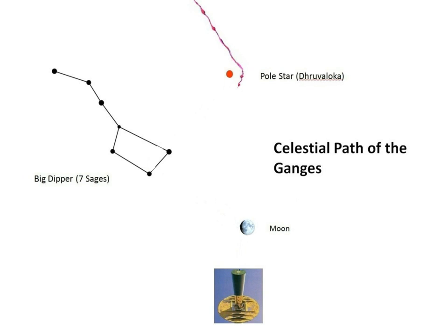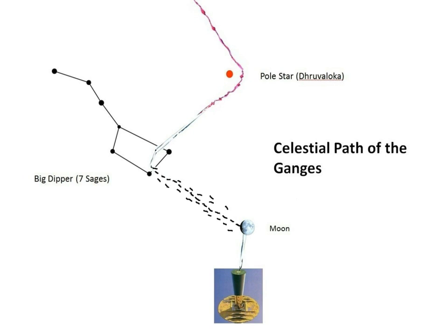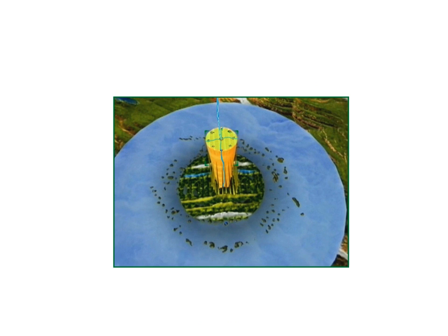It first of all goes past Dhruvaloka, or the pole star, past the Big Dipper or the seven sages — depending on what you want to call it. It enriches the moon in a number of celestial airplanes and aircraft, but then from the moon itself, this sacred River Ganges — this subtle form of the River Ganges at least — goes from the moon and lands on Mount Meru. It comes all the way down to the top of Mount Meru, as illustrated here.